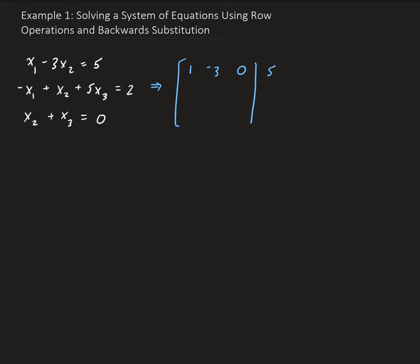And then we have 5 here for the right-hand side. Second row, we're going to have minus 1, 1, 5, and 2. Third row, we don't have x1, so we're going to put a 0 here as a placeholder, and here we have 1, 1, and 0. So that's our system represented as an augmented matrix.